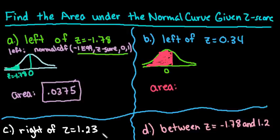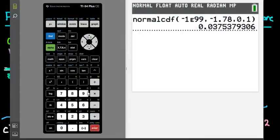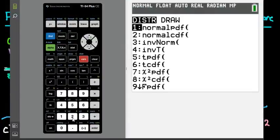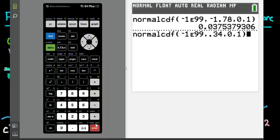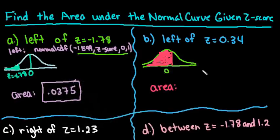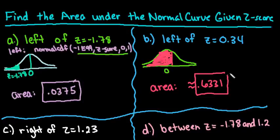So for this again we're just going to grab our calculator and we're going to do second distributions, option 2 and we would stop at 0.34. And then we're just going to hit enter a couple times and our answer would be approximately 0.6331. So approximately 0.6331, so approximately 63.3% of the area falls to the left of Z equals 0.34.